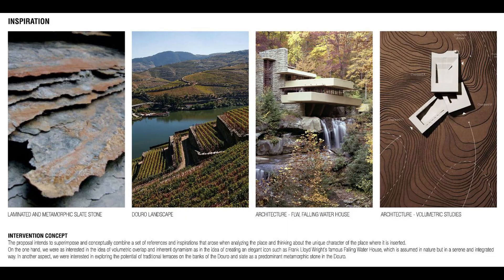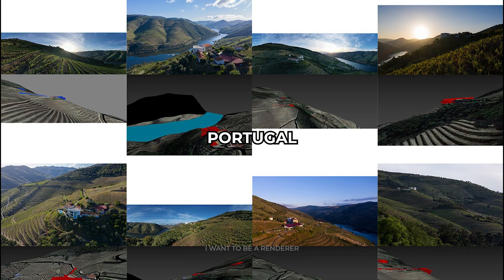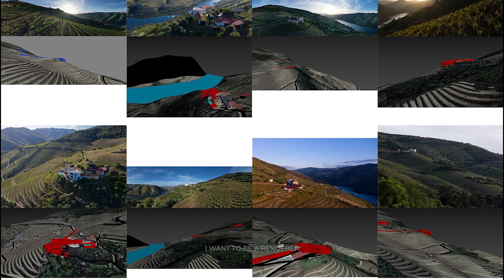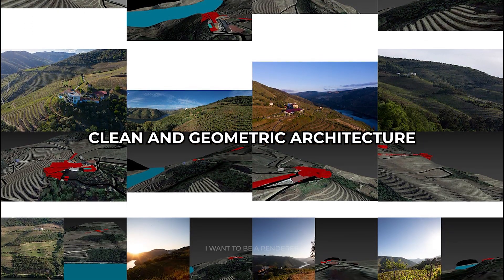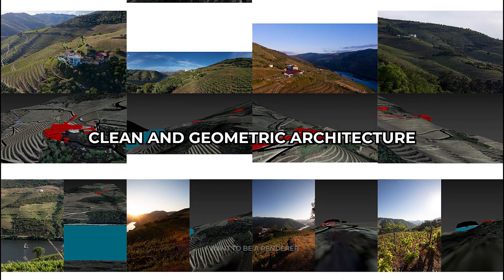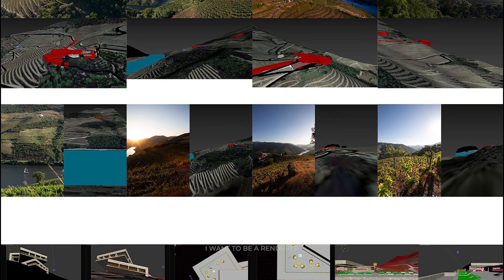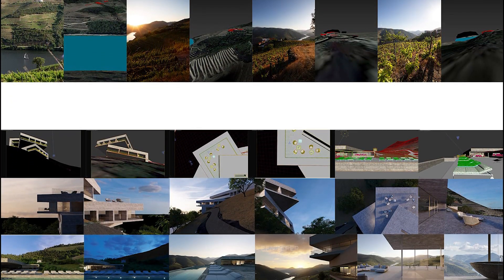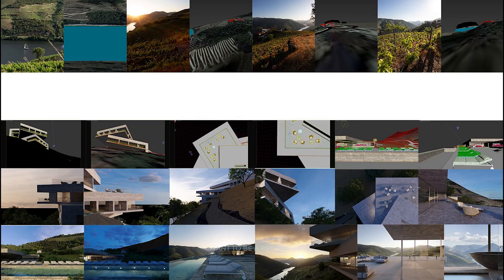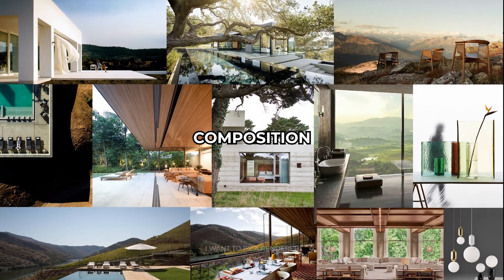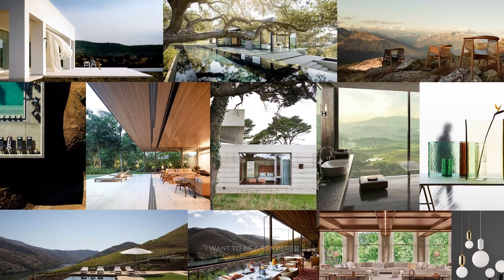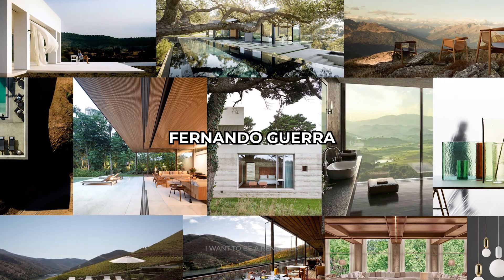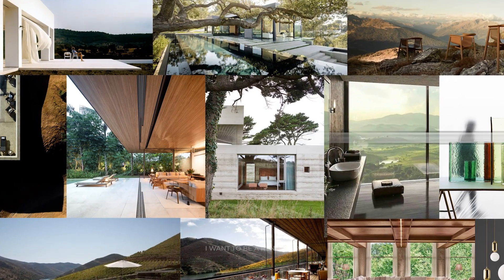This design proposal was for a competition for a hotel and winery in the Douro Valley, located in Portugal. The design is inspired by the local landscape with a clean and geometric architecture of early modernism, with overlapping concrete volumes that seem to mimic the shapes of sloping vineyards. Considering the Portuguese nature of the project, they found some of Fernando Guerra's photos inspiring.